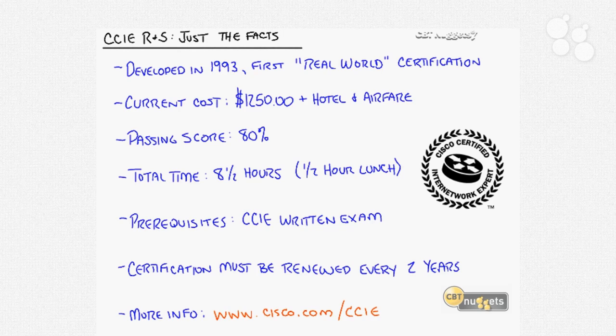They've also dedicated employees to sit there and support you the entire time you're taking that exam, which isn't cheap for Cisco either. The passing score was around 80%. The test is broken down into a series of sections, each assigned a number of points, and you have to get a cumulative 80% of those points to pass. The total time to take the exam is eight and a half hours, and you get a half-hour lunch. It used to be nine hours with a one-hour lunch, but once you're there you realize you don't need the whole hour — you probably won't be able to eat.